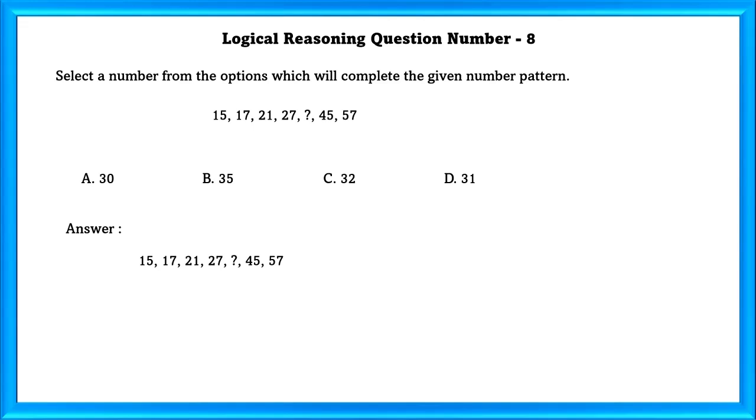Logical Reasoning Question Number 8: Select a number from the options which will complete the given number pattern. When we see this pattern, we can see that it is the increasing order of 2. So 27 plus 8 is equal to 35. So our answer is B, 35.